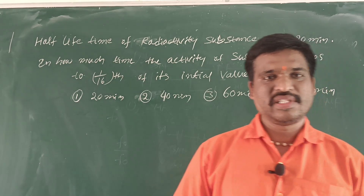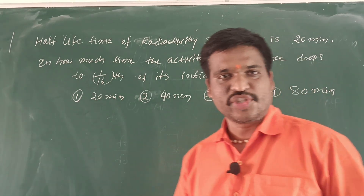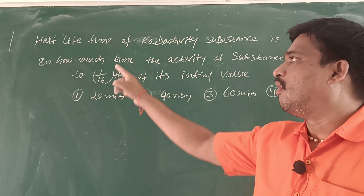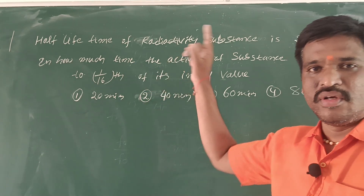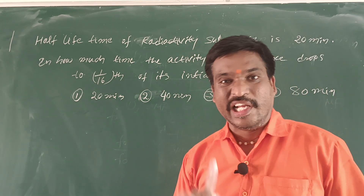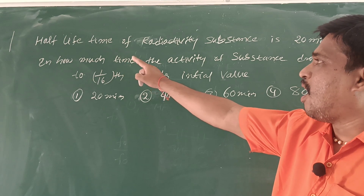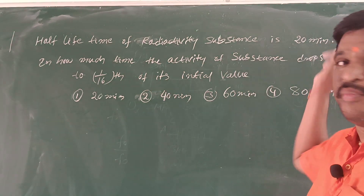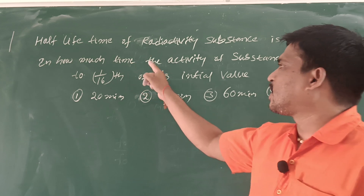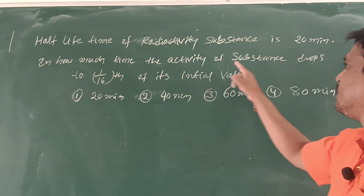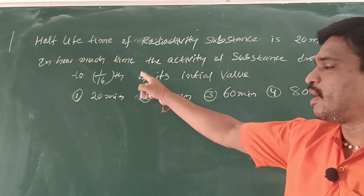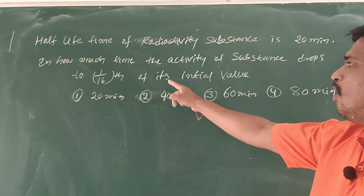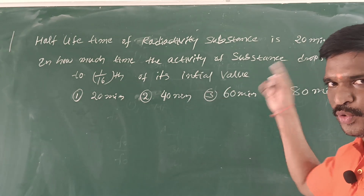Welcome back to my session. In this session, I am going to discuss a new key lesson in 2023. The half-life time of a radioactive substance is 20 minutes. In how much time does the activity of the substance drop to 1/16th of its initial value?